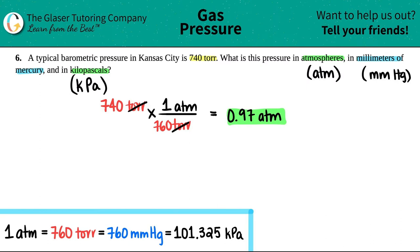Let's work on the next one. Start with what you're given. We'll do 740 Torr. And now we want to go to millimeters of mercury. But now here's a little trick. Look at the Torr and the millimeters of mercury.